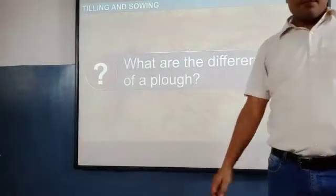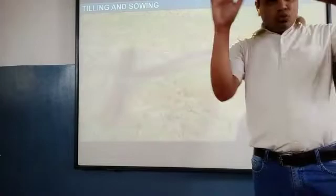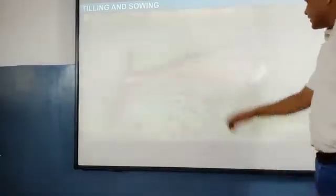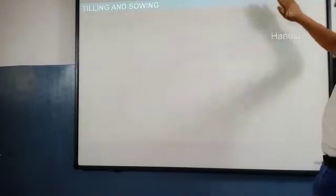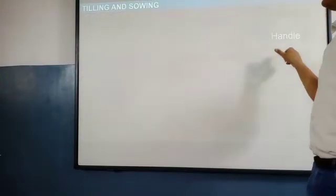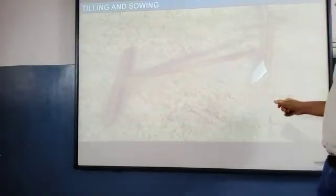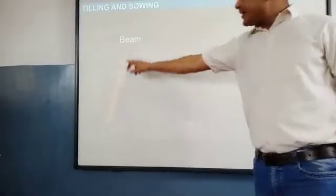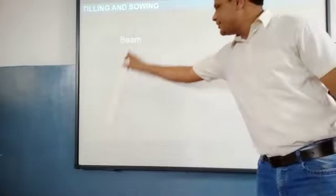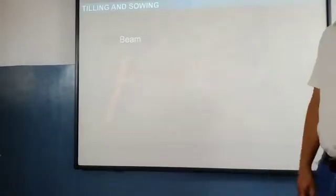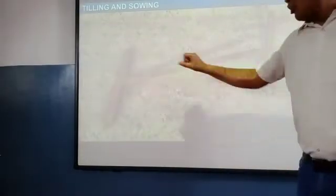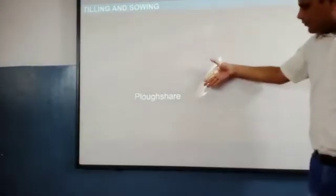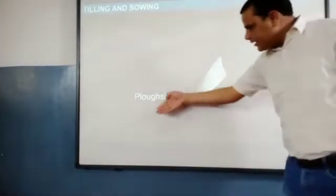What are the different parts of a plow? A plow has a handle, a beam by which we connect the blocks, and a plow share at the bottom from which the ground is dug.